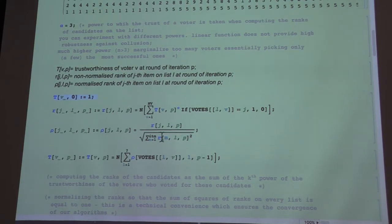but we divide with sum of the squares so that the rho squared, sum of the rho squared on each list is equal to one. So this is just a technical trick to prevent things from exploding.